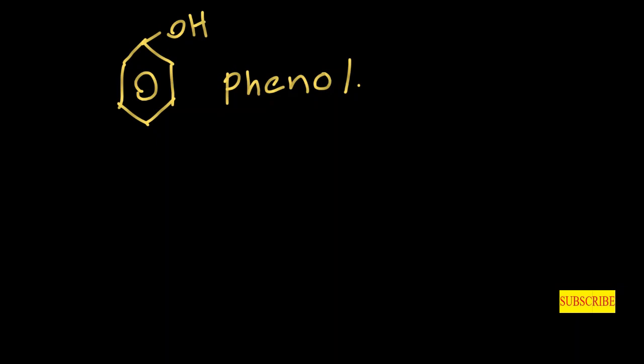Let's consider the structure of phenol. Phenol does not have resonance structures, so the stability of its single structure is less than that of phenate ion.